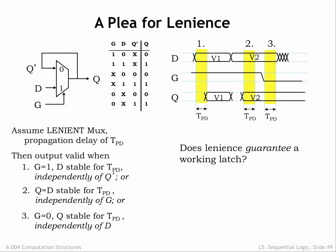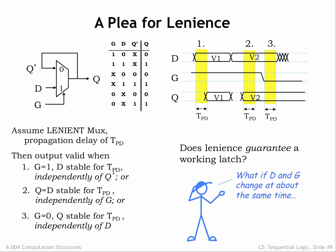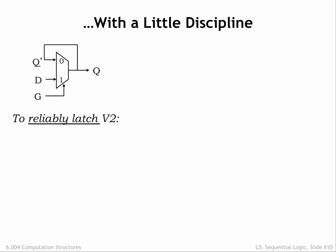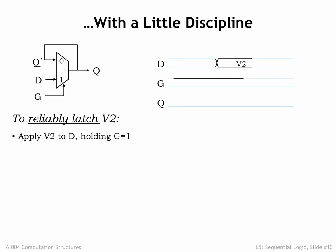Does lenience guarantee a working latch? Only if we're careful about ensuring that signals are stable at the right times to leverage the lenient behavior of the MUX. Here are the steps we need to follow. First, while the G input is high, set the D input to the value we wish to store in the latch. Then, after TPD, we're guaranteed that the value will be stable and valid on the Q output. This is condition 1 from the previous slide.